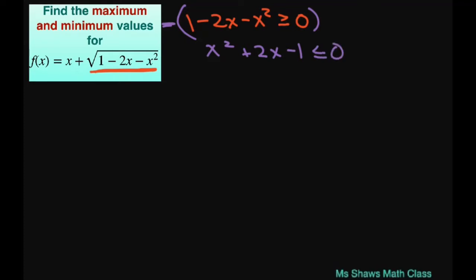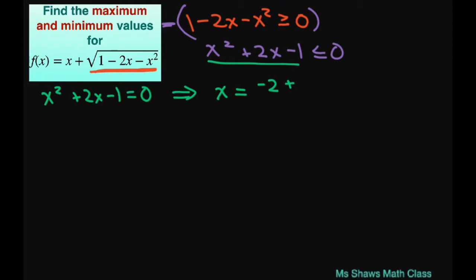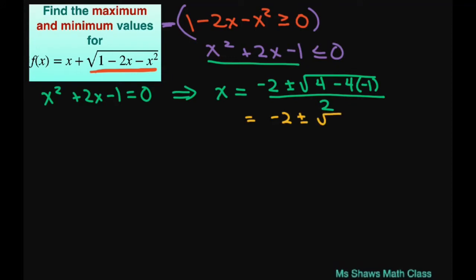Don't forget to flip the inequality sign. We can't factor this, so we're going to have to use the quadratic formula. When we have x squared plus 2x minus 1 equals 0, using the quadratic formula, we get x equals negative 2 plus or minus square root of 2 squared, which is 4, minus 4 times negative 1, divided by 2 times 1, which is 2. This gives us negative 2 plus or minus square root of 8, divided by 2.